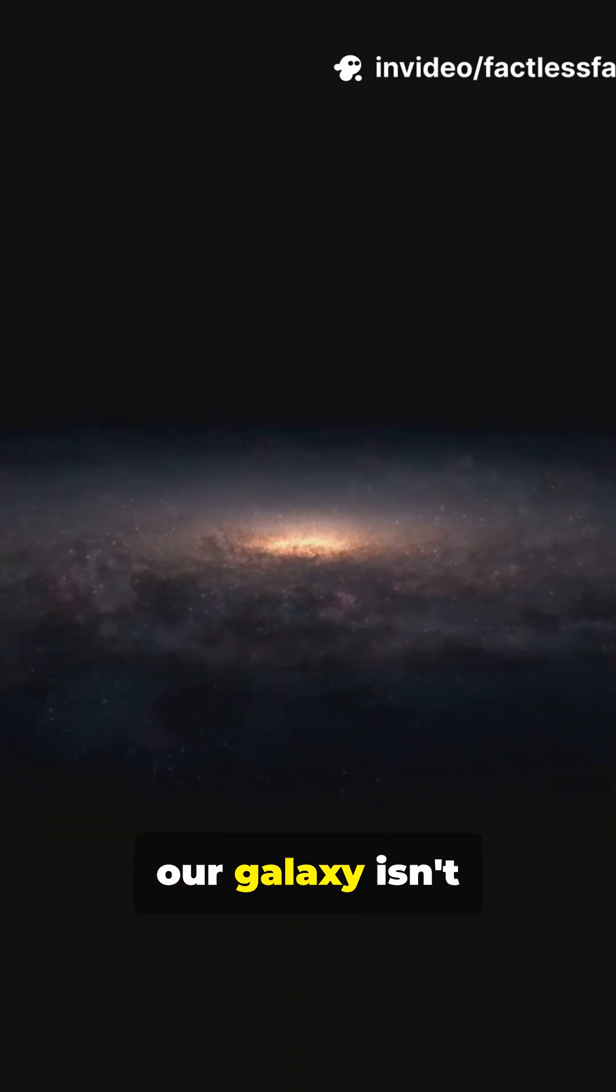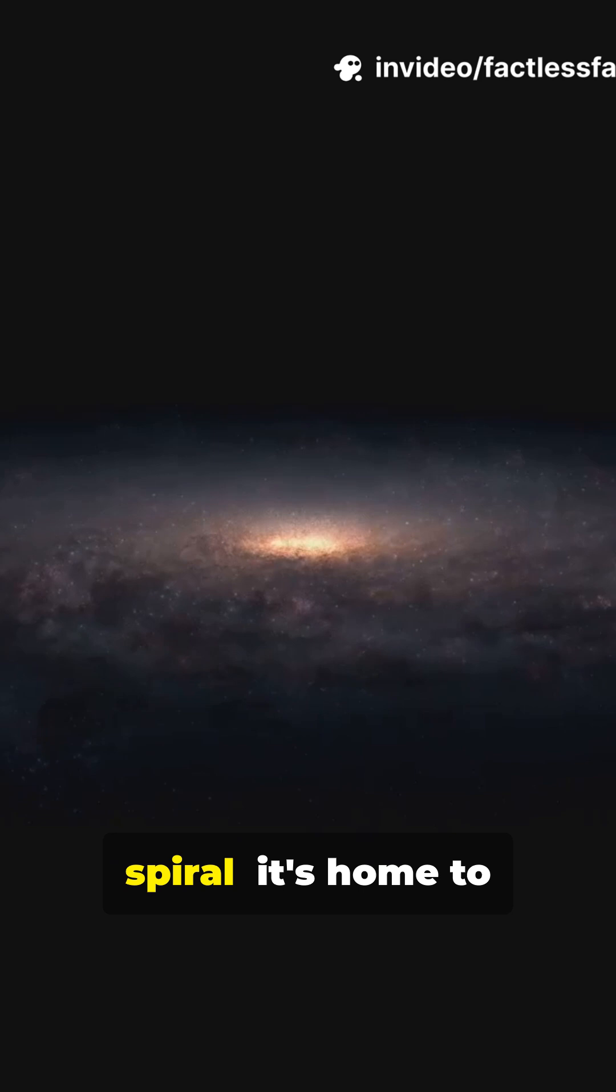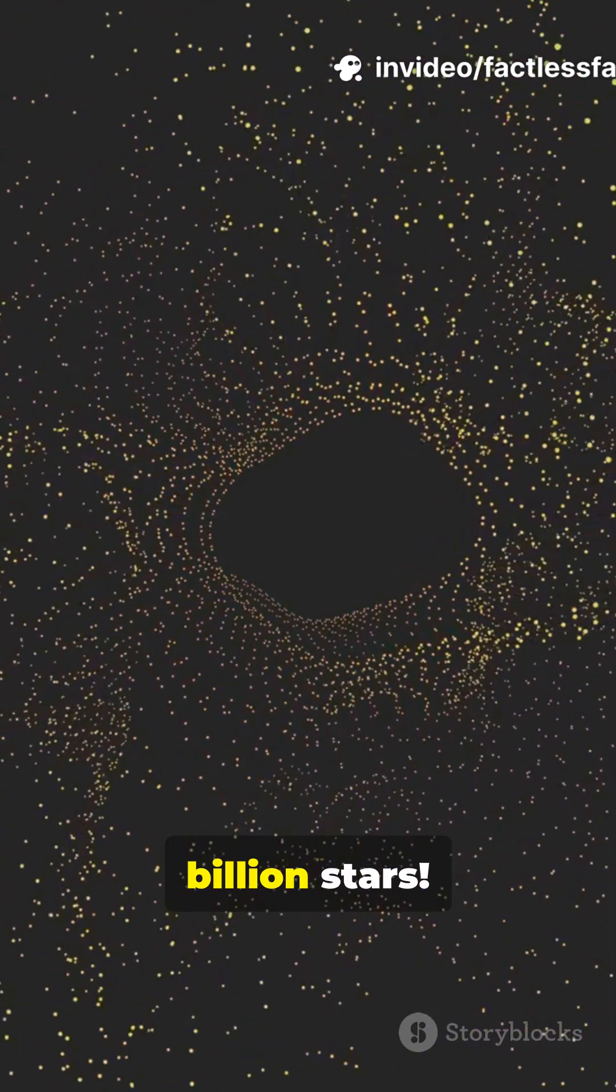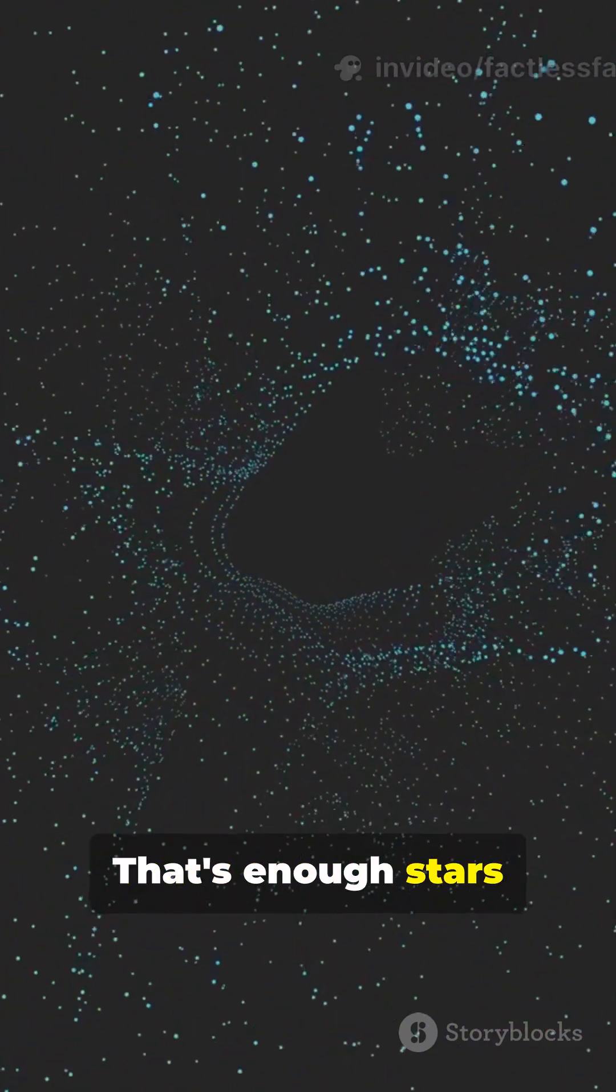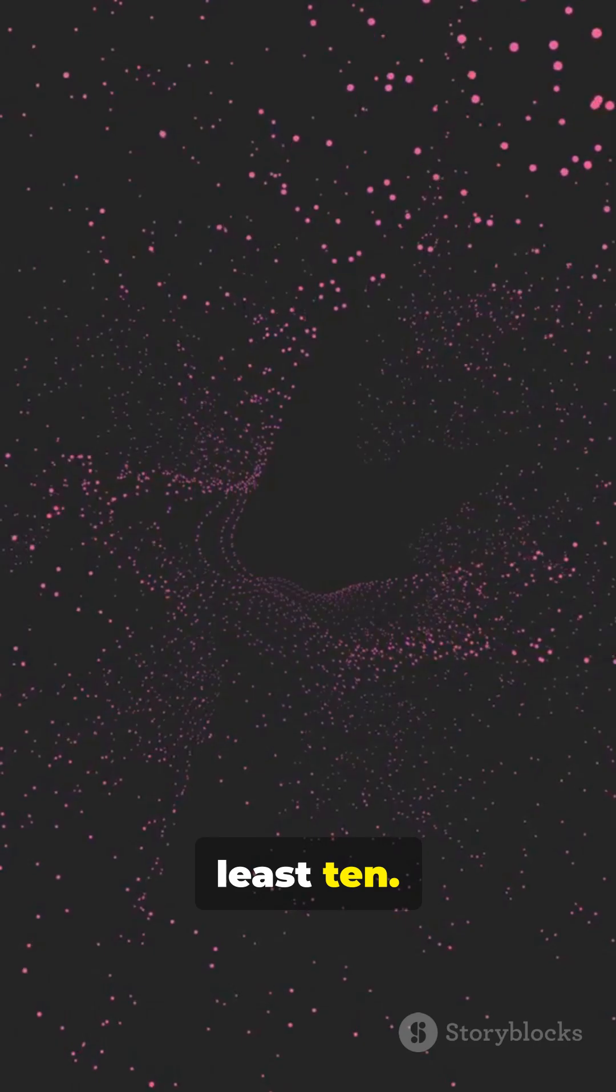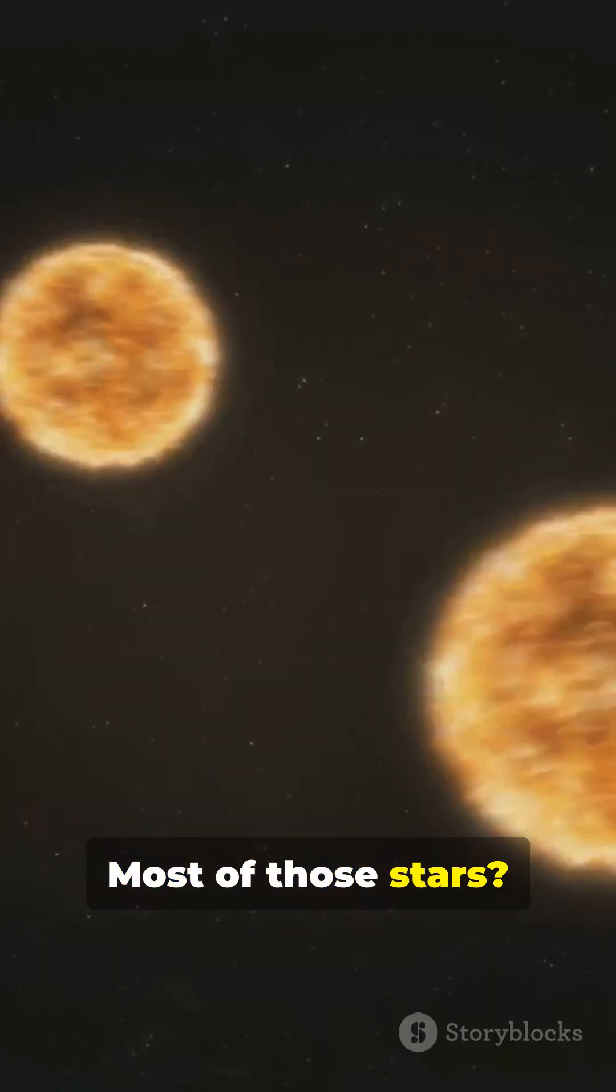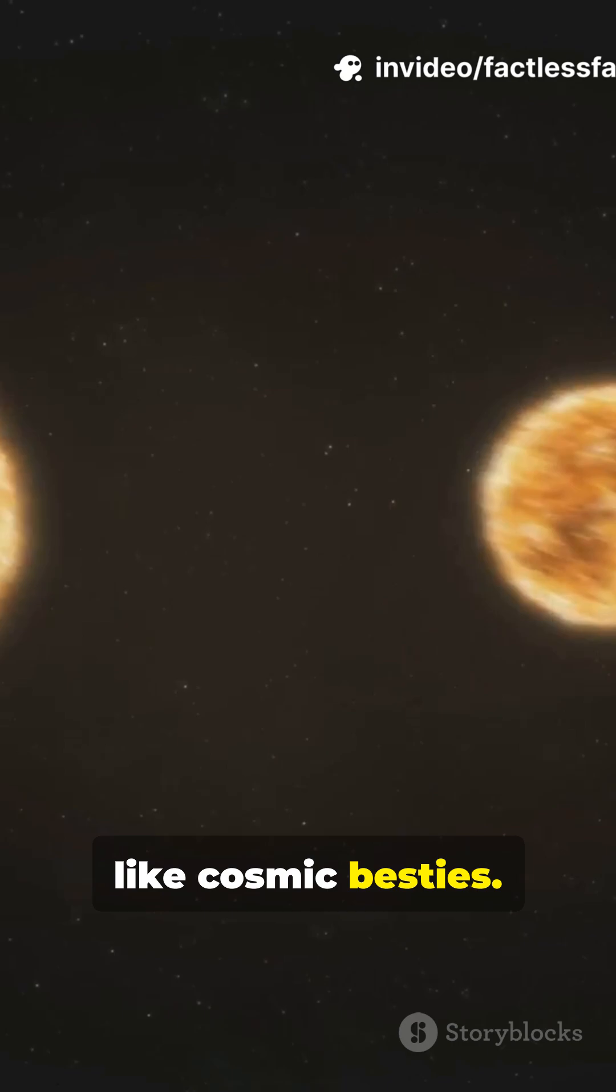First up, our galaxy isn't just a pretty spiral. It's home to around 100 to 400 billion stars. That's enough stars for every person on Earth to have at least 10. Most of those stars live in pairs, not alone, like cosmic besties.